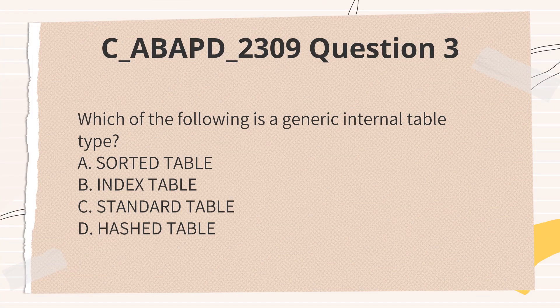Which of the following is a generic internal table type? A. Sorted table. B. Index table. C. Standard table. D. Hashed table.